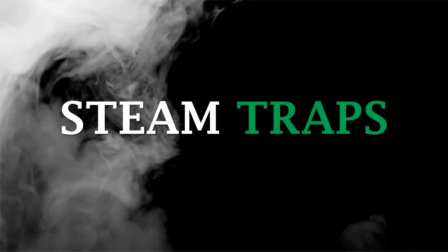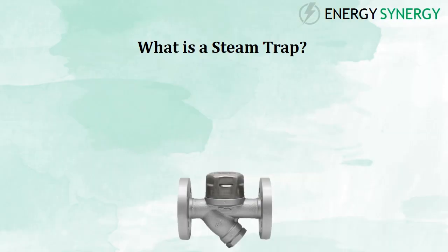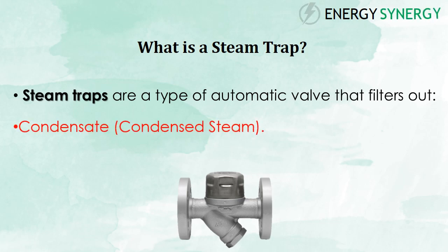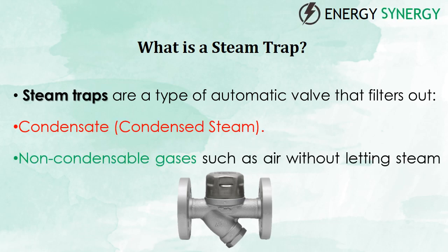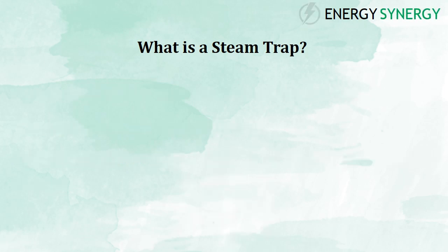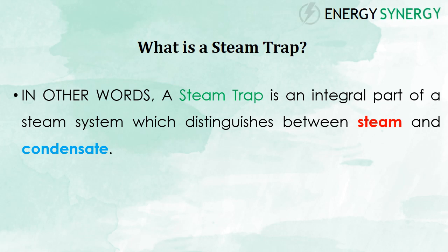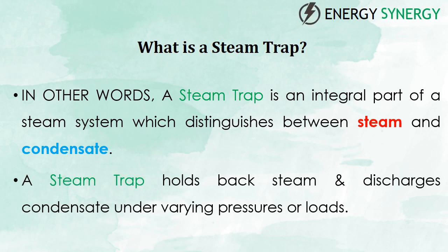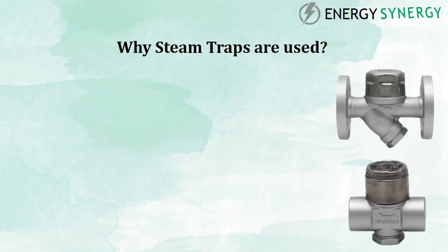Steam traps are a type of automatic valves that filter out condensate and non-condensable gases such as air without letting steam escape. In other words, a steam trap is an integral part of a steam system which distinguishes between steam and condensate. A steam trap holds back steam and discharges condensate under varying pressures or loads. Simply stated, steam traps are used to remove condensate and non-condensable gases from the steam network.